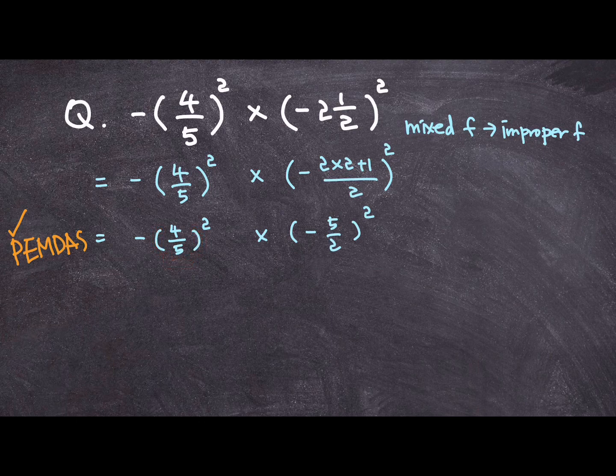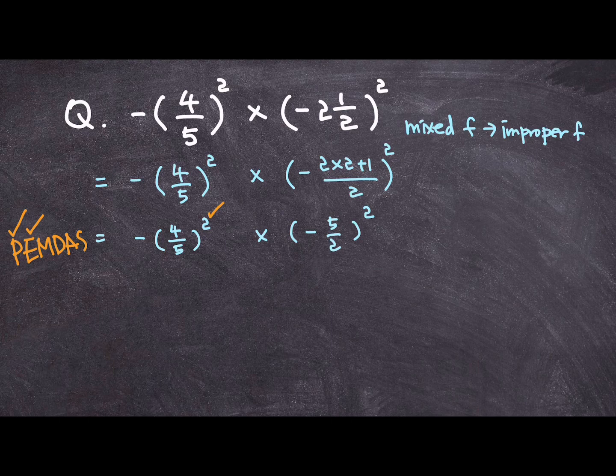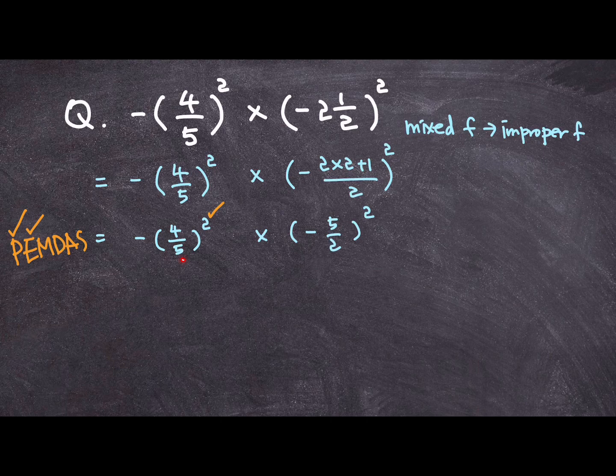And the second thing that I need to deal with is exponent, which is this one. So, before I deal with this negative sign here, I am going to square this fraction first, and then add the negative sign.